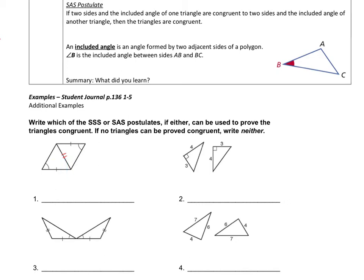I'll label these triangle one and triangle two. Looking at those two triangles, I cannot show that these are congruent because in this situation I have side side angle — and I can't use that. This is not one of the two postulates. Side side angle will never work, so there is nothing else I can show there. If no triangles can be proved congruent, we're going to write neither.